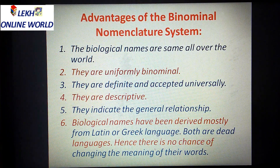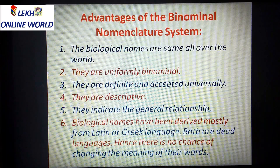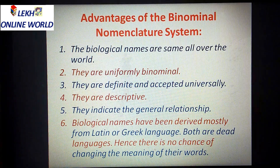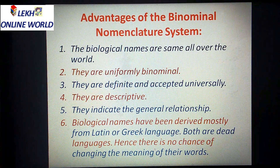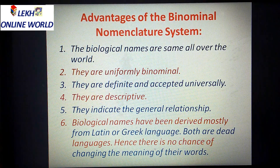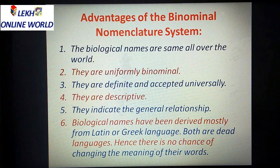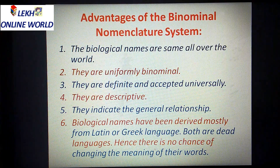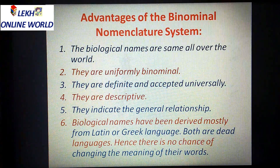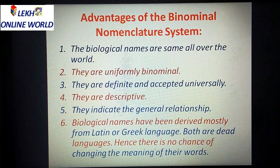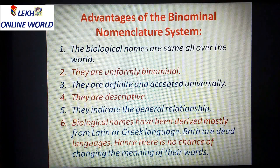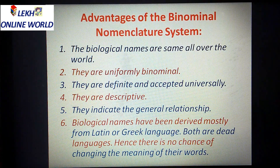They are definite and accepted universally. They are descriptive — they also provide a description. They indicate the general relationship. Biological names have been derived mostly from Latin and Greek languages. Both are dead languages; hence there is no chance of changing the meaning of their words. So scientific names are written in Latin and Greek so that their meaning cannot be altered.